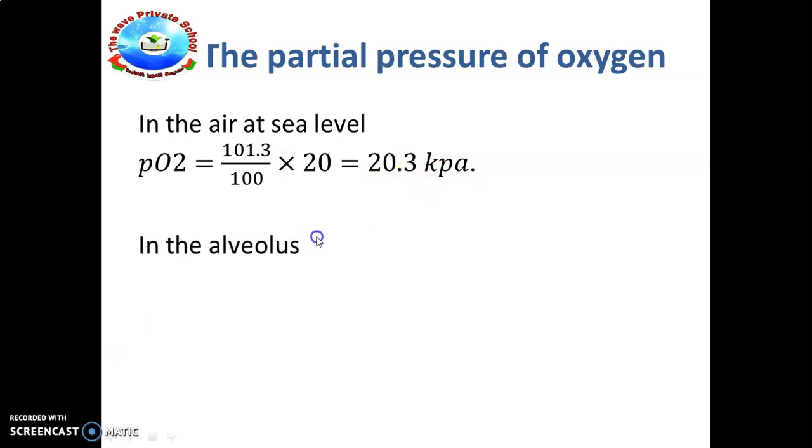In the alveolus, the partial pressure of oxygen at sea level is PO2 = 101.3 divided by 100 multiplied with 14, because we will have 14% when we compare to the alveolar air. In the alveolar air we have 14% of oxygen, so we take that here. The answer is 14.2 kilopascals. Like this we will find the oxygen percent at the sea level and also in the alveolus.